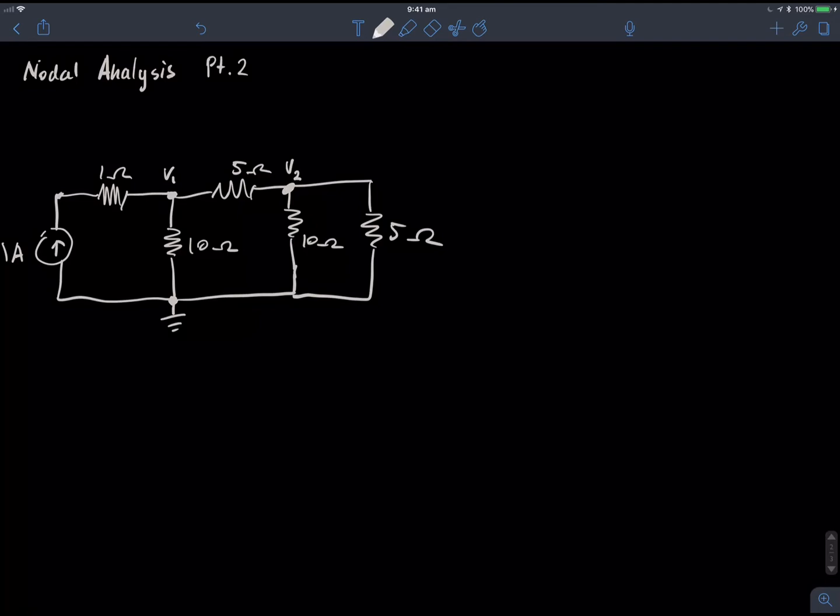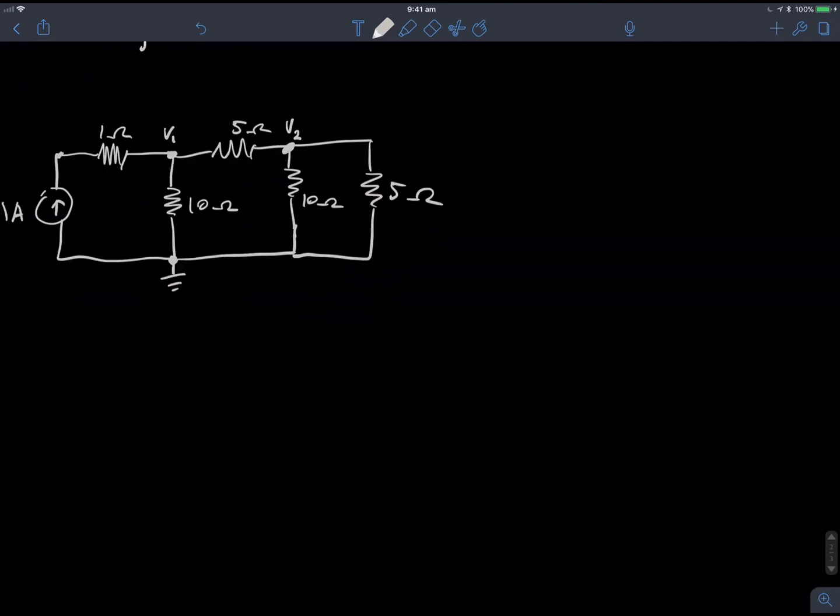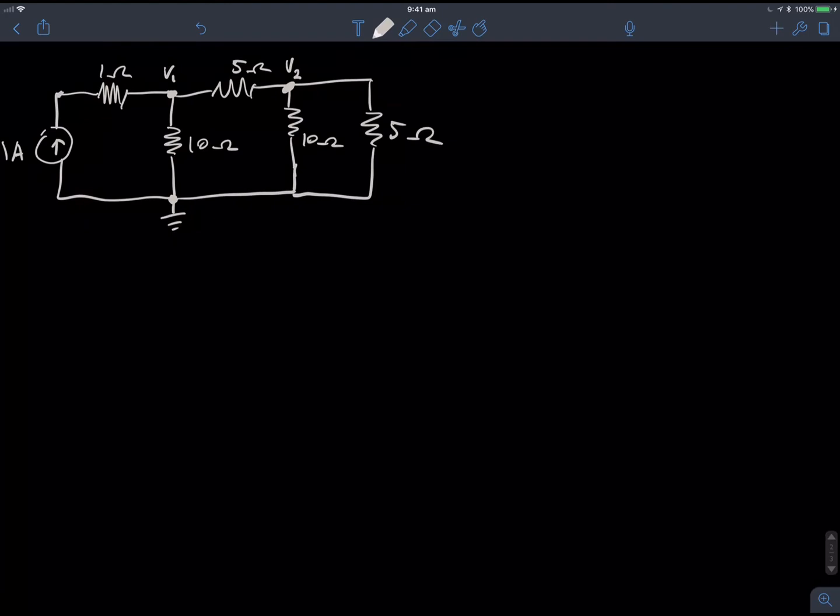So, what we have to do now, which is different from the last one, is that we have to have an equation for V1 and V2 using a KCL equation, and then we have to simultaneously solve them. So, I'll start off with a V1 equation. I'll do them in different colours so we can distinguish between them.